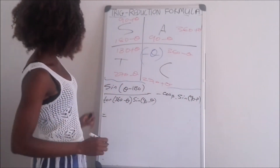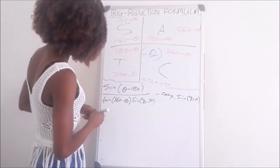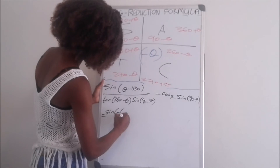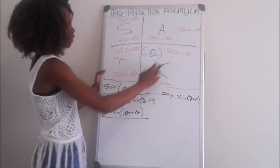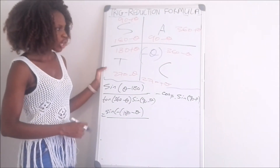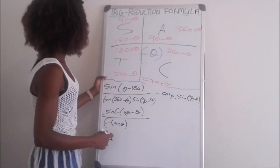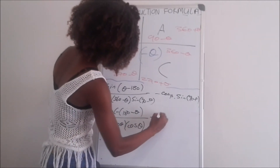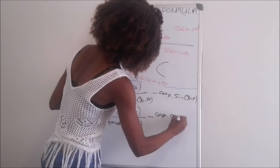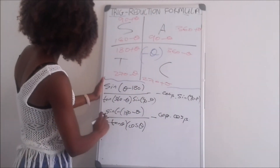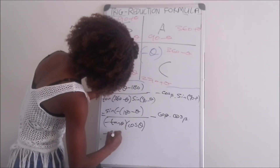With this one, we have theta minus 180. We always take out a common factor of negative, so we get sine of negative(180 minus theta). For tan(360 minus theta): 360 minus theta is in the fourth quadrant where only cos is positive, so the answer is negative tan theta. Sine(90 minus theta) is a co-function giving cos theta. Minus cos beta, multiplied by sine(90 minus beta) which is also a co-function giving cos beta. Since sine of negative theta is negative, and 180 minus theta in the second quadrant is positive sine, the result is negative sine theta.